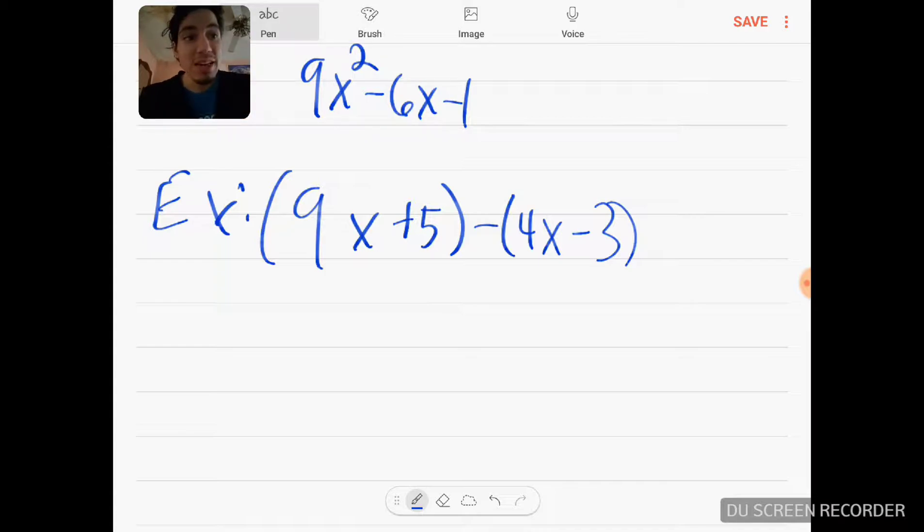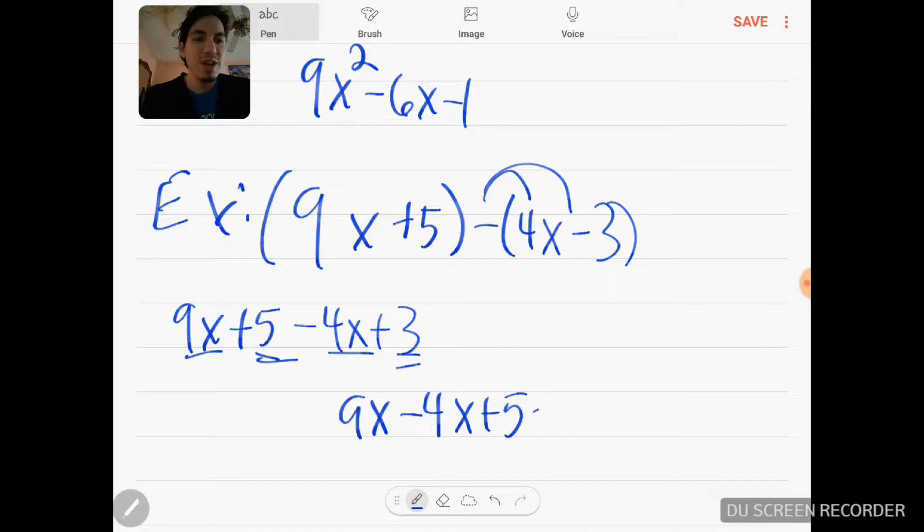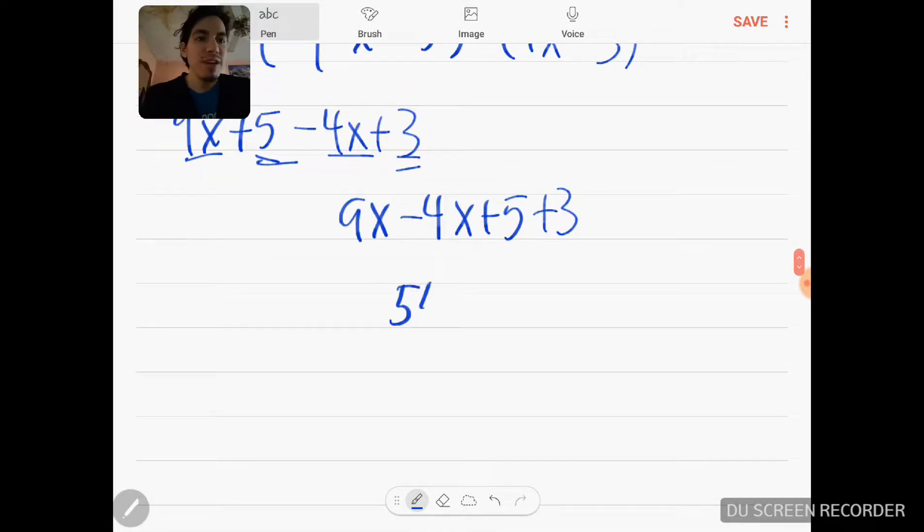All right, so first step: distribute the negative sign. So we have 9x plus 5 minus 4x plus 3. Now we reorder this so we can combine like terms afterwards. So we have 9x minus 4x plus 5 plus 3. I get 5x—because 9 minus 4 is 5x—plus 8 as my answer.